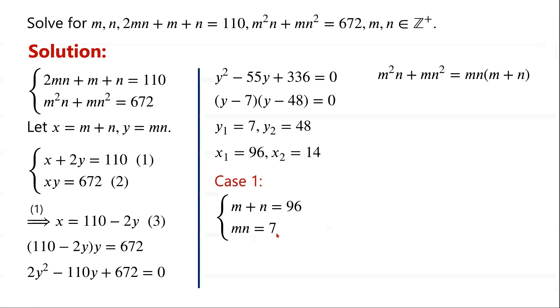So M, N are both less than or equal to 7. So the sum of M and N can't equal 96. Therefore, this pair of equations has no integer solutions. So this case is discarded.